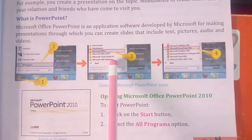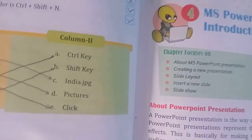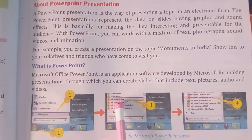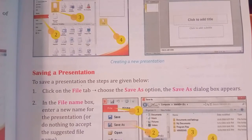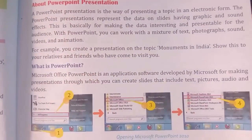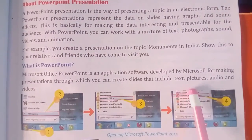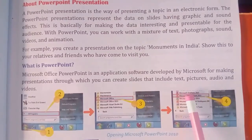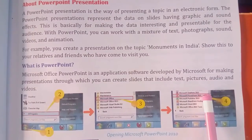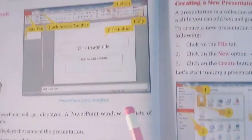Next, step 3: click on the Microsoft Office option — जो यहाँ दिखाया गया है, Microsoft Office option में click करना है। उसके बाद step 4: select Microsoft PowerPoint 2010 — Microsoft Office पर click करने के बाद जो भी Microsoft Office के applications की list आएगी, उसमें से Microsoft PowerPoint 2010 पर click करना है।